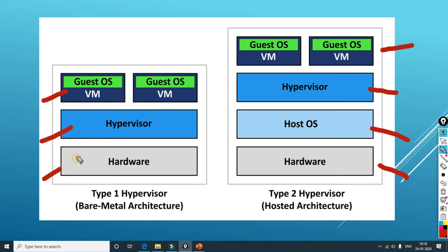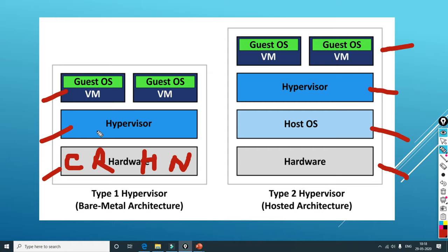You would have tons of CPU, gigs of RAM, terabytes of hard disk, and gigabits of network. The hypervisor is managing all of this and providing it to the virtual machine based on the settings that we configure on that virtual machine.